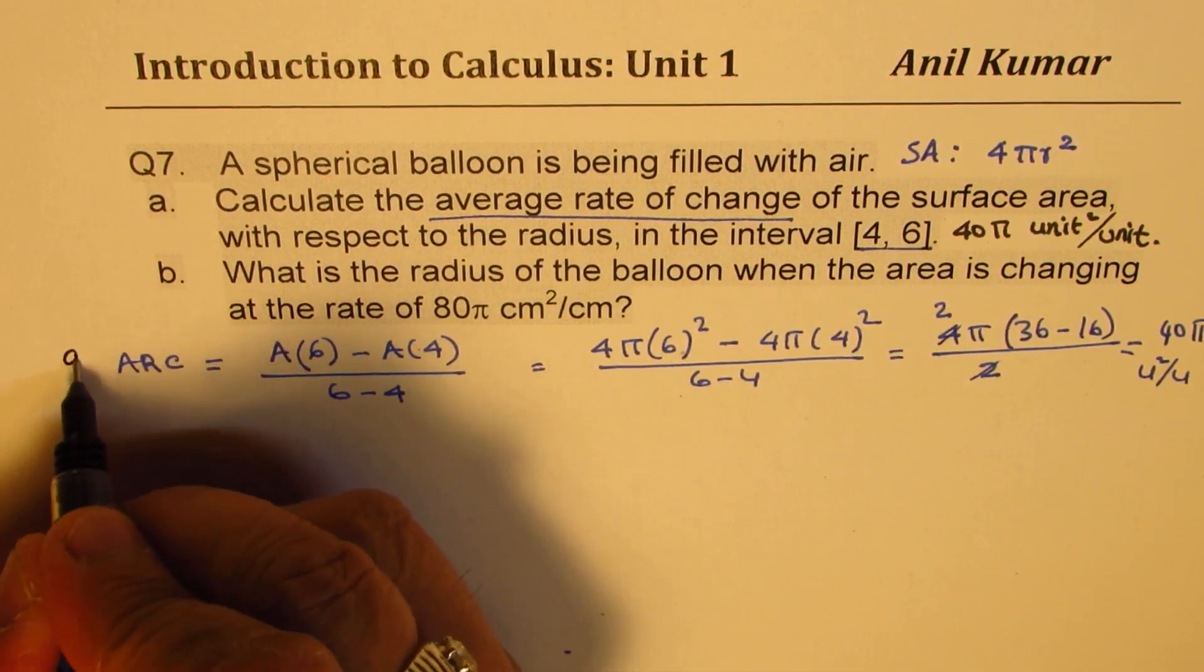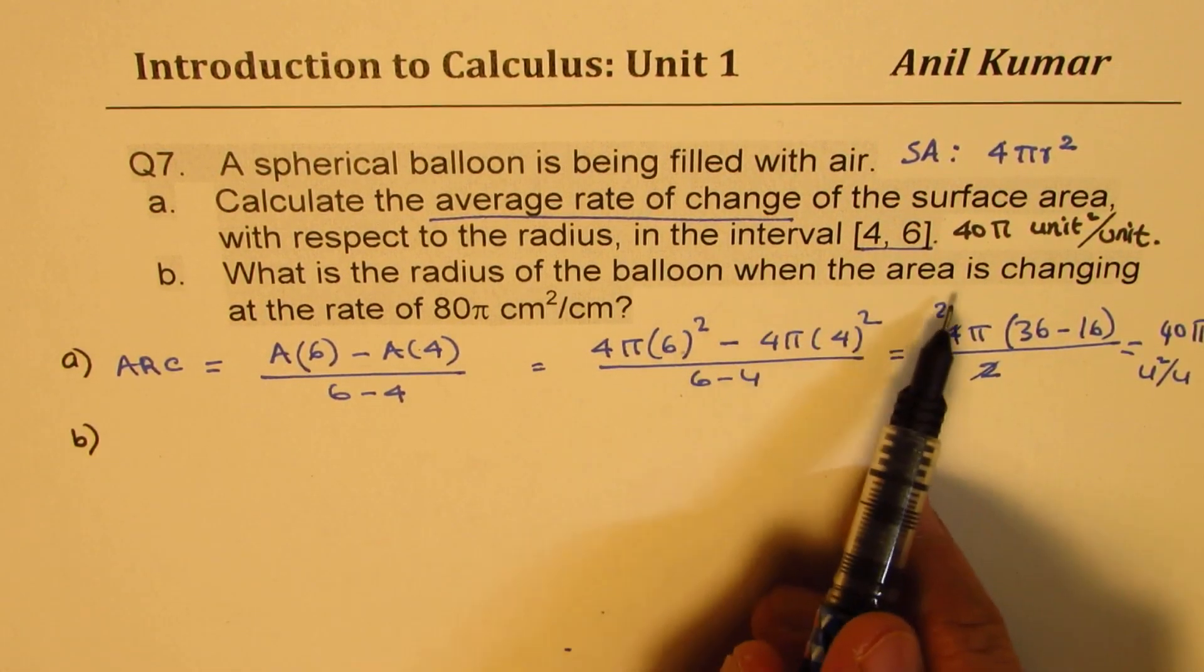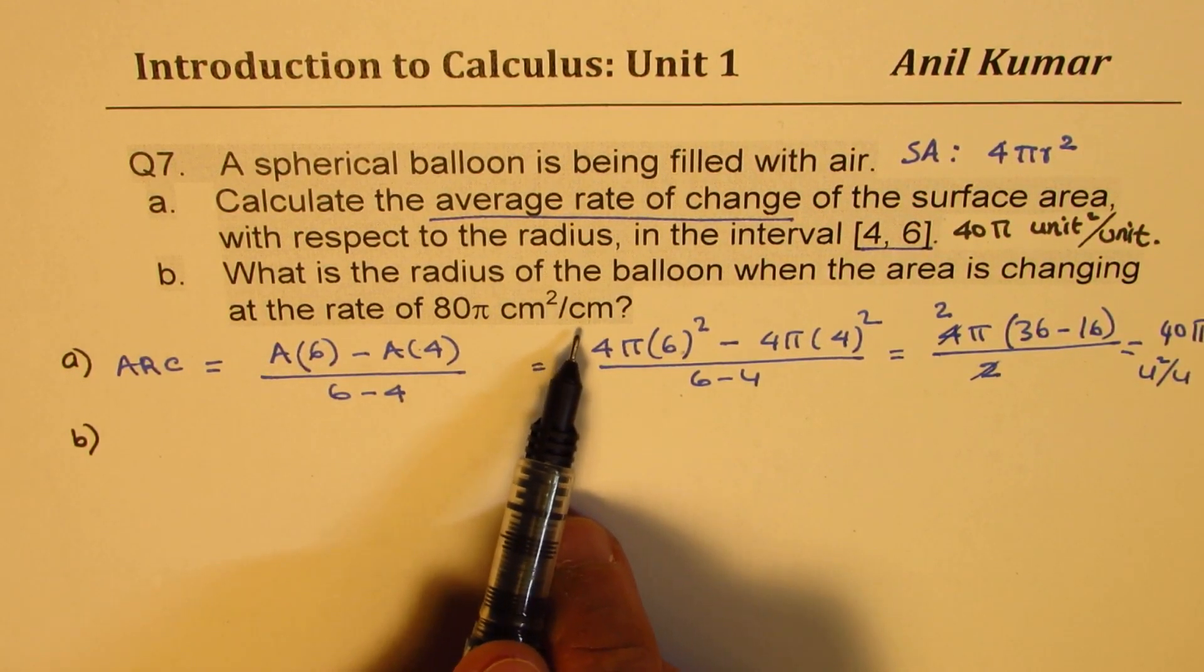Now let's do part B. What is the radius of the balloon when the area is changing at the rate of 80π cm²/cm?